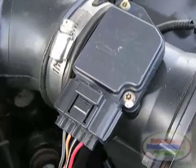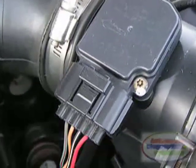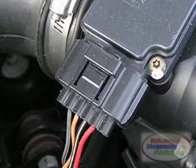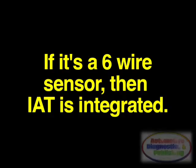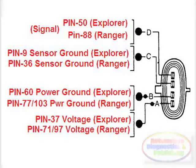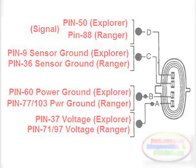The mass air flow sensor on your Ford may have 6 or 4 wires coming out of the plastic round air filter box. If a Ford mass air flow sensor has 6 wires, this indicates that the air temperature sensor is integrated within the mass air flow sensor itself. If it's a 4-wire sensor, then the air temp sensor is located externally, usually on the air duct connecting the round air filter assembly to the throttle body.